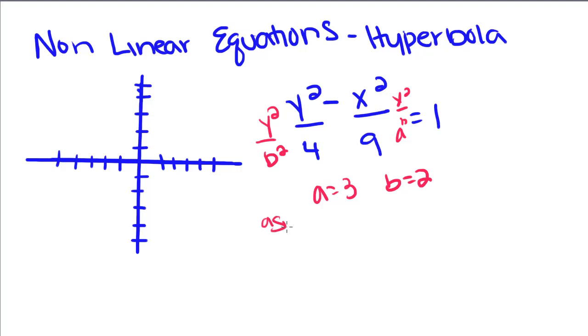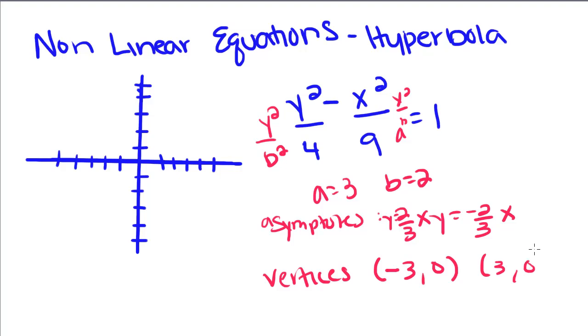So its asymptotes are going to be at 2/3 x and negative 2/3 x, y equals, y equals. And its vertices are going to be at (-3,0) and (3,0). But the thing to remember about this one is that the y comes first, and this x is negative.